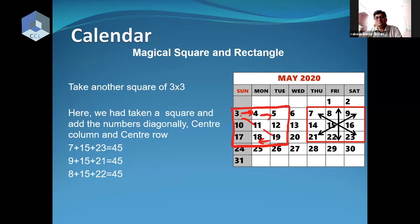From 4 we go one ahead to 5, and from 18 we go back to 17. Yes sir. From 3 we go to 10, and from 19 we go to 12 — seven above and seven below. That will also give the same sum.